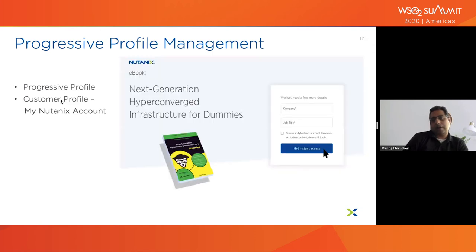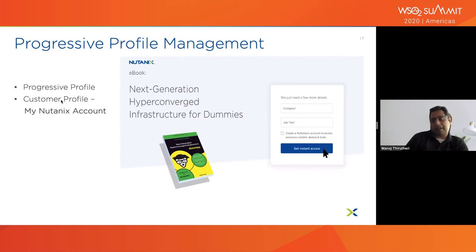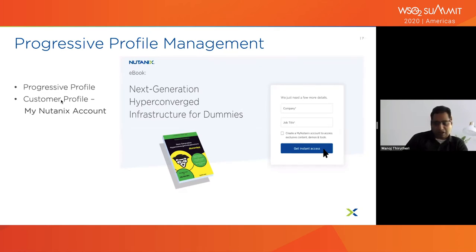Once you've tried our product and show more interest in hybrid cloud, I'll ask a couple more fields — your company and job title — along with an optional consent with the right privacy policy to create a MyNutanix account. Once I have your profile, I can start personalization. It's a simple progressive step — imagine asking a prospect to fill 10 fields and you'd probably drop 80% of your traffic right there. That's the power of progressive profile management for lead generation.